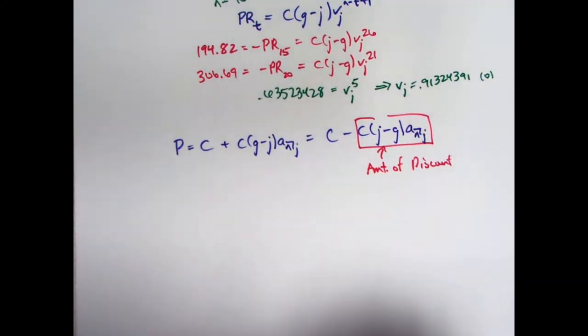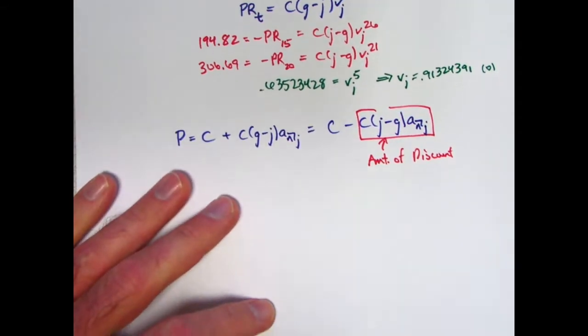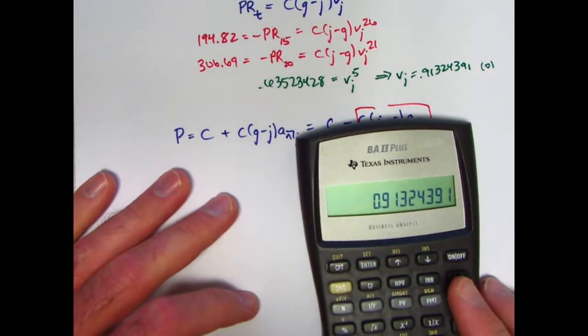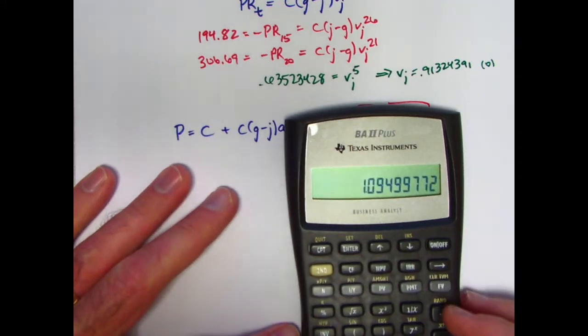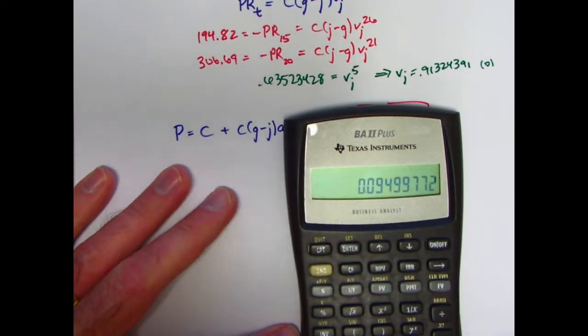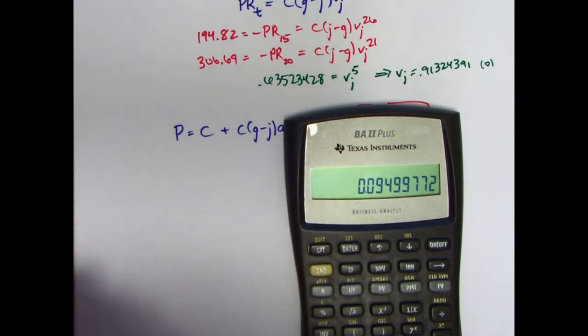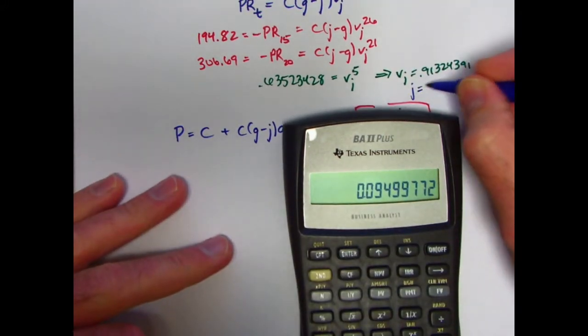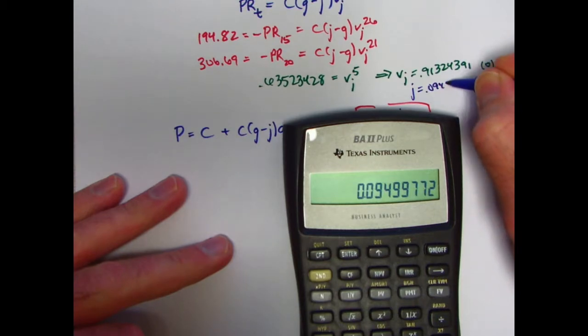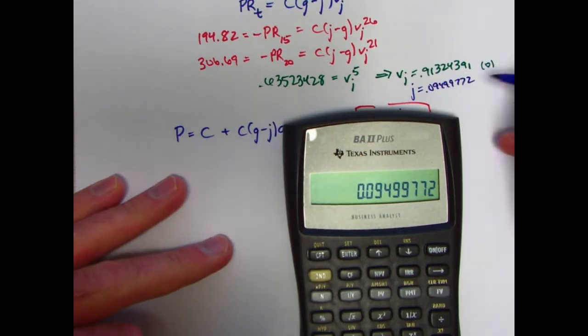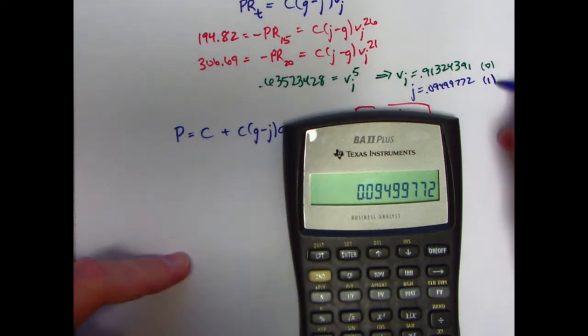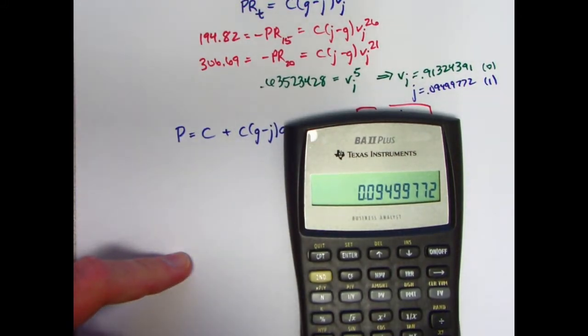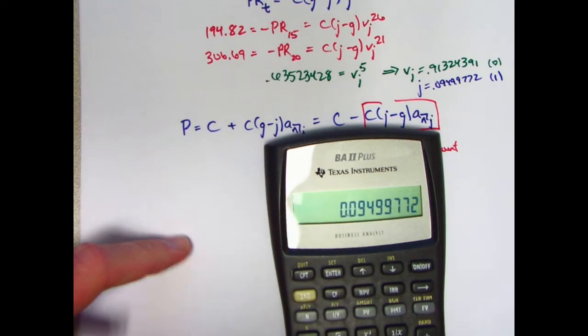Well, I can find j, too. Here's v_j, again up there, stored in register 0. If I take its reciprocal and subtract 1, that will be j. j is going to be 0.09499772. It probably would be fine to round that to 0.095, but I will just go ahead and store that in register 1.